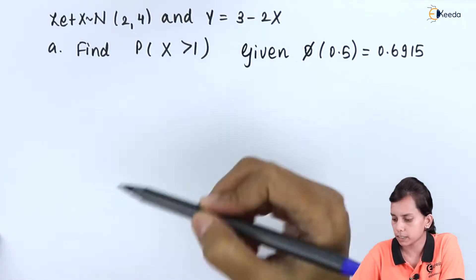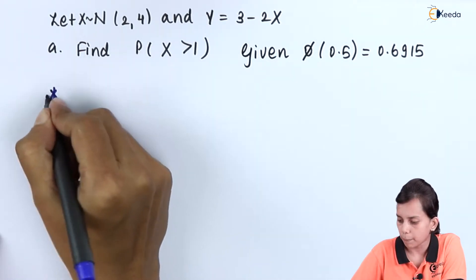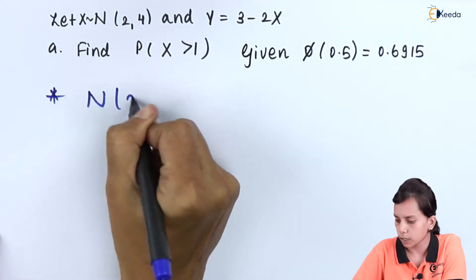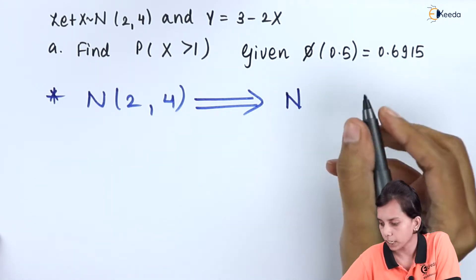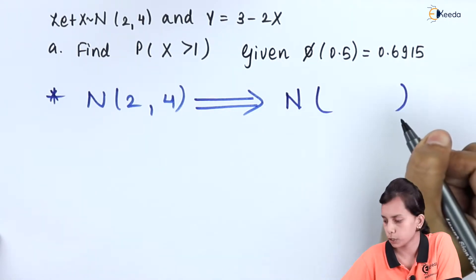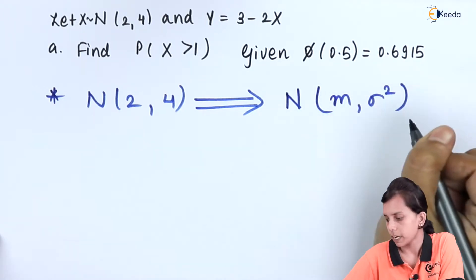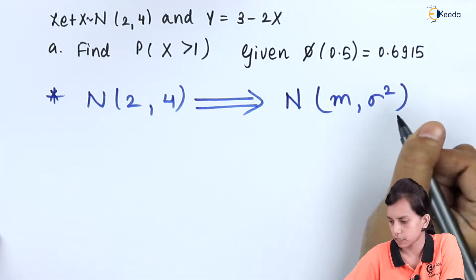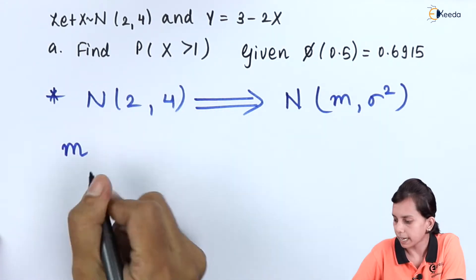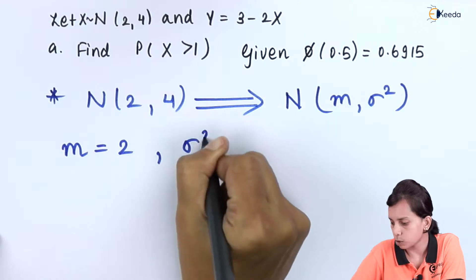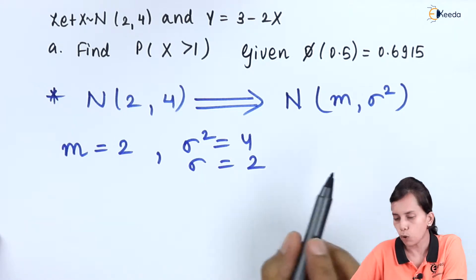Let us understand the Gaussian distribution with the help of this numerical. Capital N(2,4) is the standard notation for Gaussian distribution: N(m, σ²), where m is the mean and σ² is the variance. Comparing, we get m equals 2 and σ² equals 4, which means the standard deviation σ equals 2. This is our first key point.